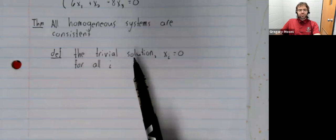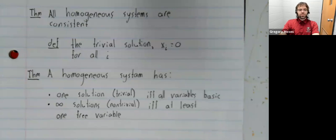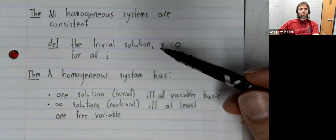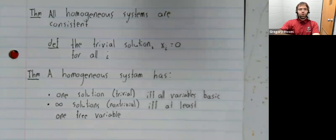That is to say, solutions other than this. And we don't really have a special theory for homogeneous systems. We just have the same theorem that we have for any system. That is, we have only one solution, which must therefore be this trivial solution, if all of the variables are basic,